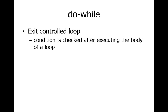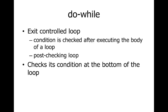In the while loop, the condition is checked first, and if it is true then the set of statements is executed. In do-while, the set of statements is executed first and the condition is checked afterward. This is why it is also known as a post-checking loop — it checks its condition at the bottom of the loop.